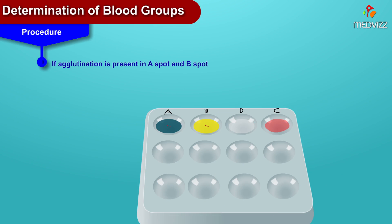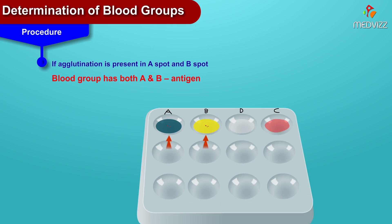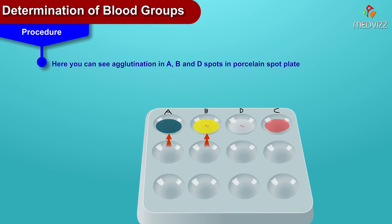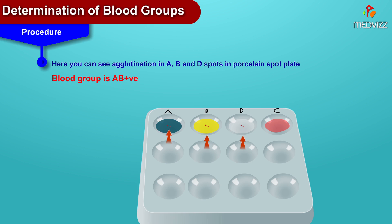If agglutination is present in both spot A and spot B, it means that the patient has both A and B antigens on the surface of their red blood cells. Here is an image where you can see agglutination in A, B, and D spots in the porcelain spot plate, which gives the blood group as AB positive. The positive denotes Rh positive.